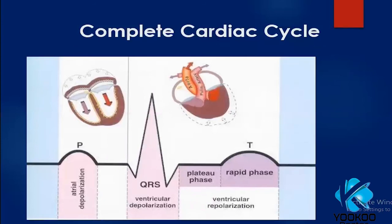So far what we have discussed are the ECG waves and intervals — this represents a complete cardiac cycle starting from the P wave representing atrial depolarization up to the T wave representing the rapid phase of ventricular repolarization.